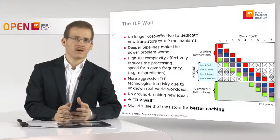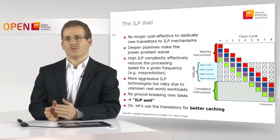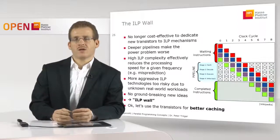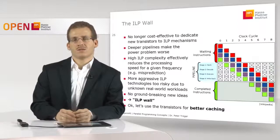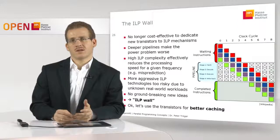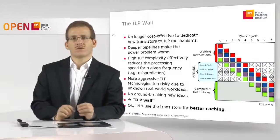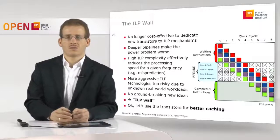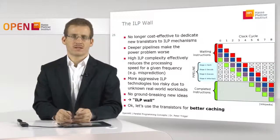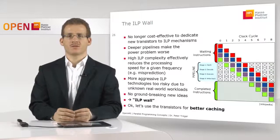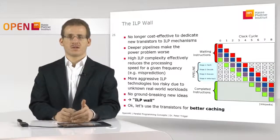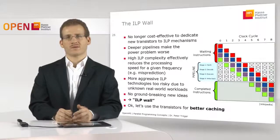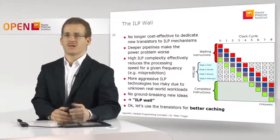The problem with these ILP approaches is that, in parallel to the power wall problem, the capabilities of ILP optimization are somehow limited. Since ILP is an idea that has been around for a very long time, most of the low-hanging fruit — the easy, well-working ideas — are already figured out and used inside the processor hardware. Modern processors have all the mechanisms imaginable for such optimizations. If you continue to exploit such mechanisms even further, you may run into situations where you over-optimize the execution.